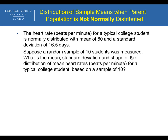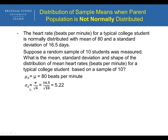You can stop the video and go through this example. The answer for the mean is equal to 80 — the mean of the means is equal to the population mean, which is 80. The standard deviation of the distribution of sample means is the original standard deviation, 16 and a half, divided by the square root of the sample size, which is 10. And the shape of the distribution, because the parent population is normal, the distribution of sample means is also going to be normal.